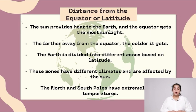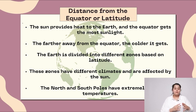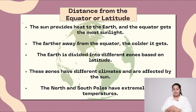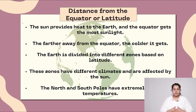Distance from the equator or latitude. The sun provides heat to the earth and the equator gets the most sunlight. The farther away from the equator, the colder it gets. The earth is divided into different zones based on latitude. These zones have different climates and are affected by the sun. The north and south poles have extremely cold climates.